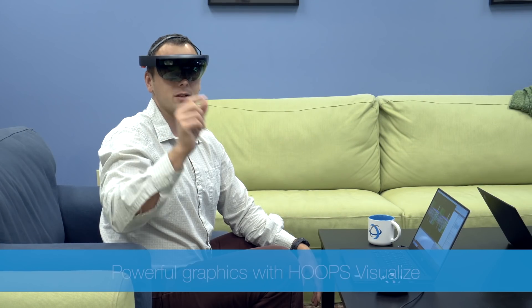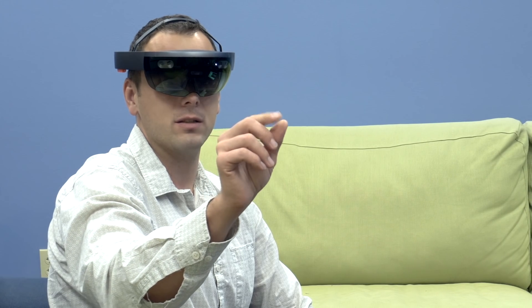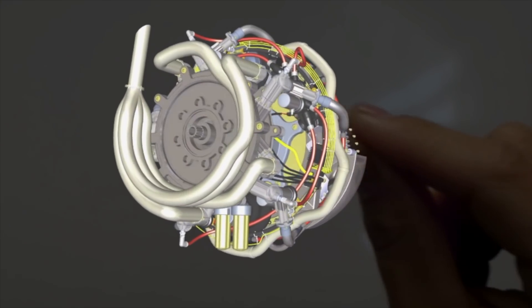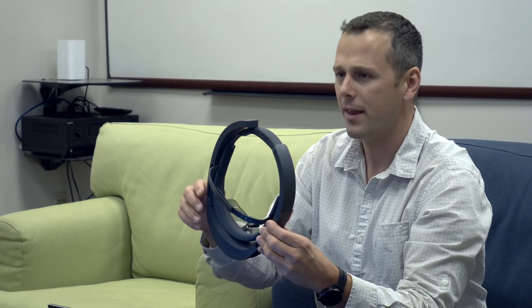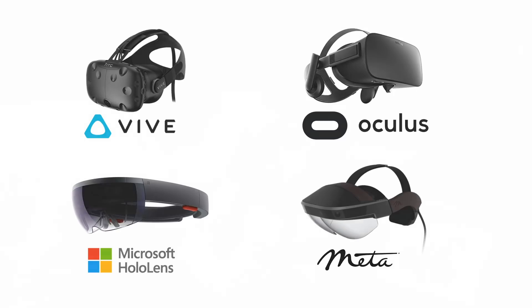Hoops Visualize is the gold standard graphics engine for developing high performance engineering applications. It enables rich 3D graphics on all major desktop, mobile and XR headsets including support for the HTC Vive, Oculus Rift, Microsoft HoloLens and Meta 2.